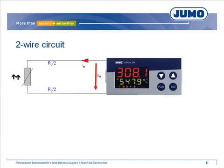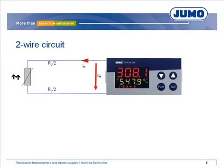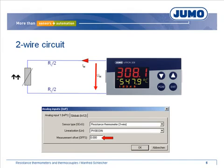Resistance thermometers can be connected to a field device in three different circuit versions. The picture shows the so-called two-wire circuit. In that case, the field device measures the resistance value of the thermometer plus the lead resistance, resulting in a higher measured temperature than the real temperature. An offset correction can be applied in the device or with the setup program, though the lead resistance will still change with ambient temperature and influence the measuring signal.